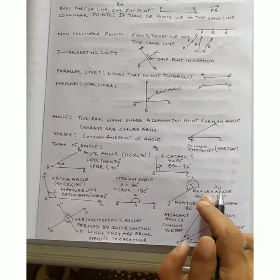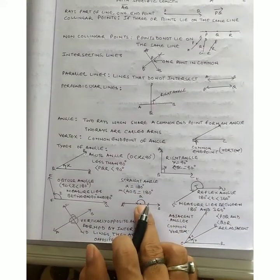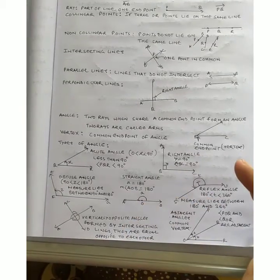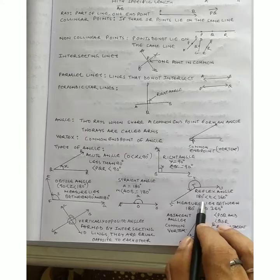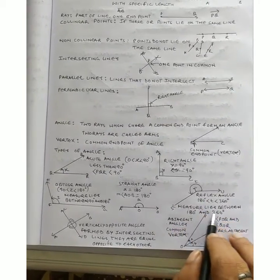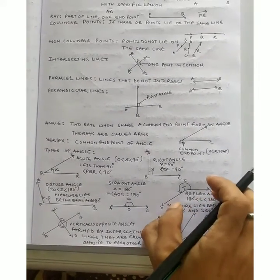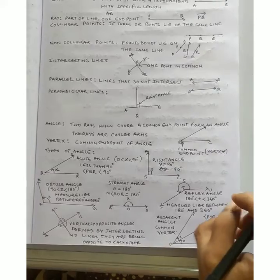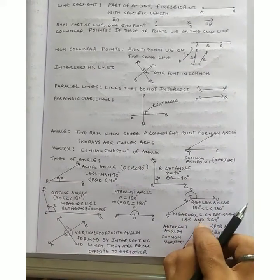The reflex angle ki value lie karti hai 180 less than t less than 360. Ab humne hai straight angle 180 hai, toh 180 se jyada wala jo angle hota hai usse hum kehte hain reflex angle. Toh 180 less than t less than 360. That means measure of reflex angle lies between 180 and 360. Reflex angle 180 se jyada hoga aur uska measurement 180 aur 360 ke beech mein lie karega.